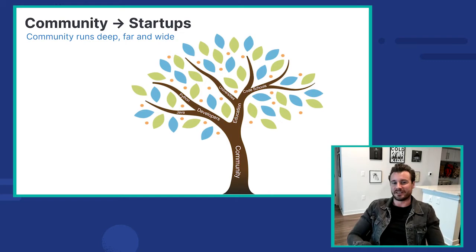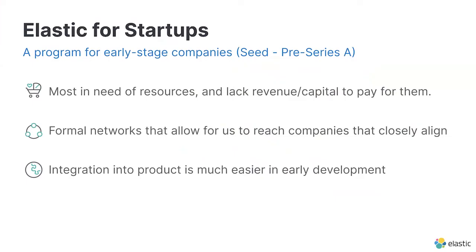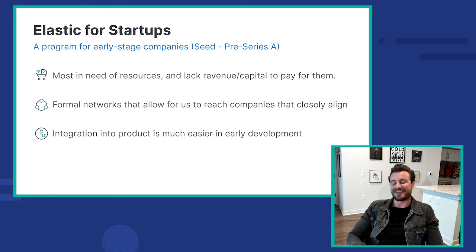We looked at all the work we've done and wanted to identify the next branch to grow — our next avenue to explore — and felt startups was a critical place for us to become involved. When growing that startup branch, we wanted to start where we can provide as much value as possible with the structure required to grow roots. We landed on serving the early-stage market, focusing on seed to pre-Series A companies, understanding that resources from companies like Elastic can be a difference maker in their initial growth and long-term success.